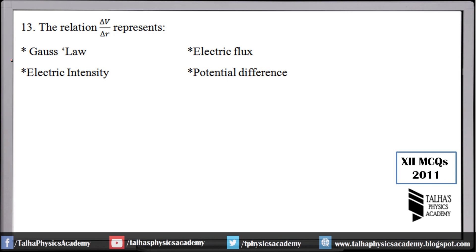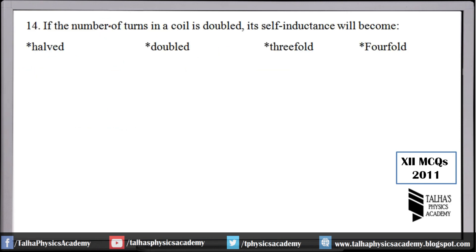Number 13: the relation ΔV/Δr represents electric intensity, also called potential gradient. The formula for potential difference involves the dot product of electric intensity and displacement between two points: ΔV = E·Δr. Rearranging gives ΔV/Δr = E (electric intensity). This is why electric intensity is called the potential gradient.